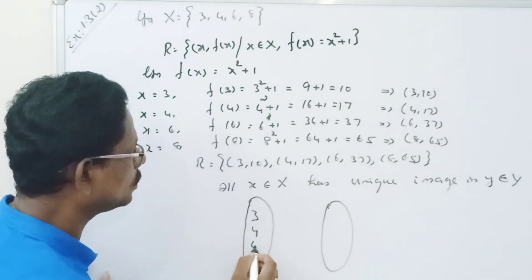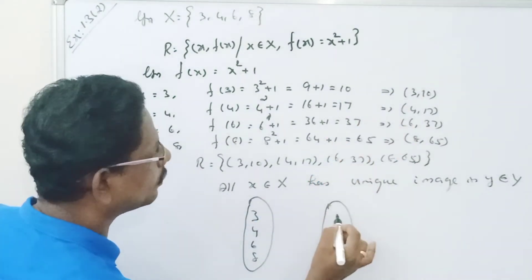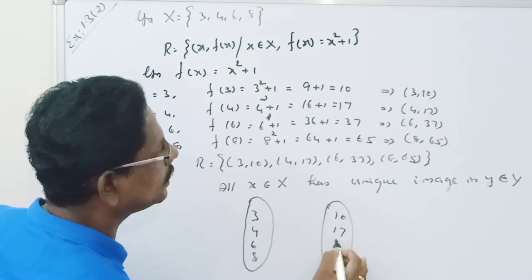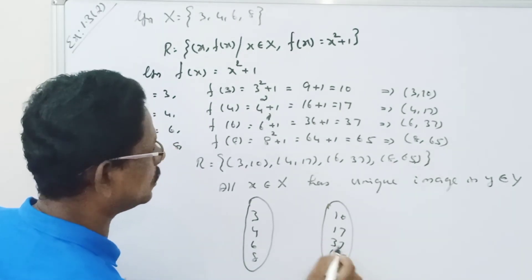The elements are 3, 4, 6, 8 in X. The elements in Y are 10, 70, 37, 65.